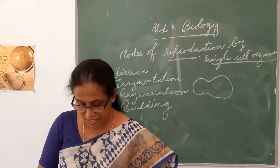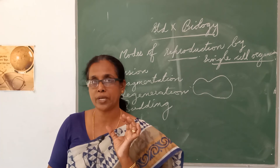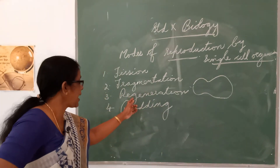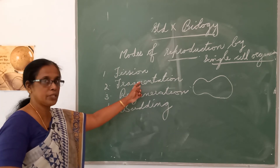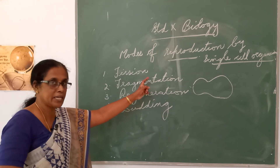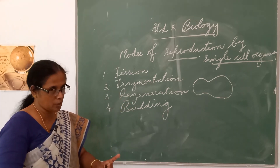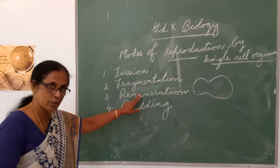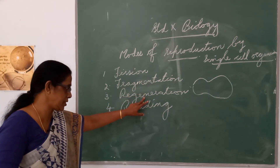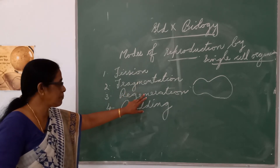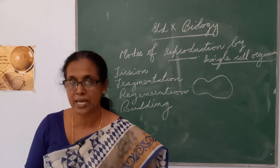In animals like hydra and planaria, if we cut them into small pieces, each piece grows into a complete organism. The difference between fragmentation and regeneration: fragmentation happens naturally when the body matures and breaks up into small pieces. Regeneration occurs when we cut an organism — each part grows into a new individual. This can be seen in hydra and planaria.